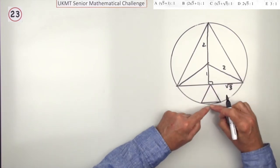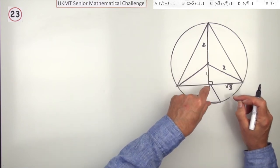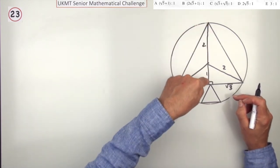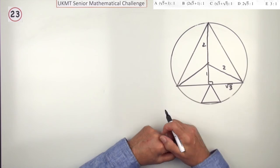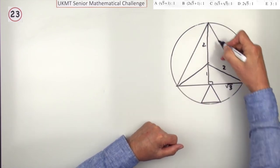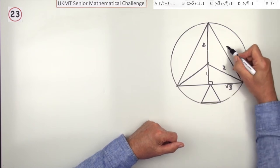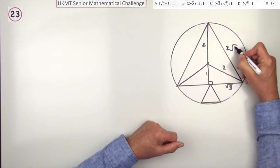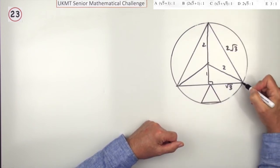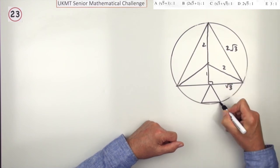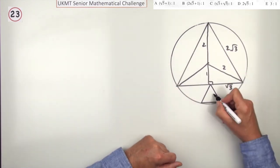If that triangle had been the other way round, there's space for another one there, so the answer would have been 3 to 1, but it's not. Now I know if that's root 3, then double that must be 2 root 3, so the length of this side is 2 root 3. What's the length of this side? We'll call that x.